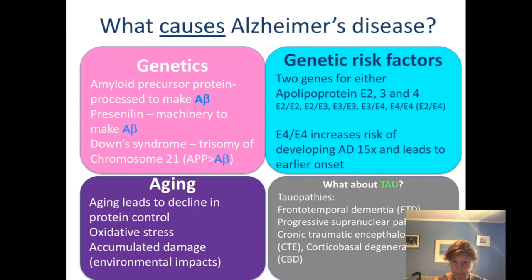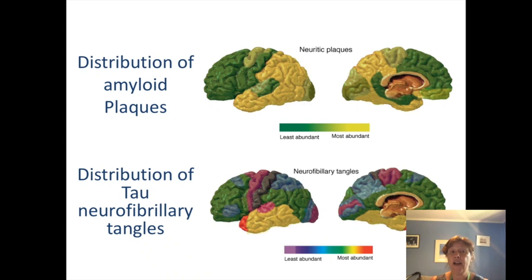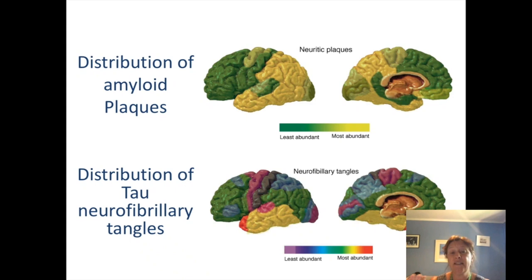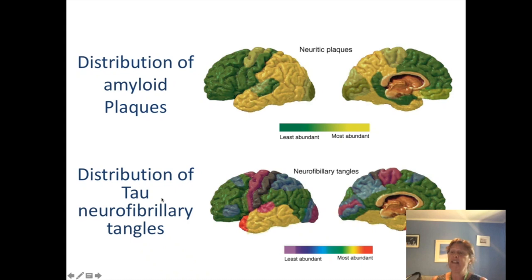We can also look at the distribution of amyloid plaques and tau neurofibrillary tangles in the brain to think about which of these is causing the deficits seen in patients. The distribution of amyloid plaques is quite even, whereas the distribution of tau is all over the place. It's been shown that generally the distribution of neurofibrillary tangles correlates better with cognitive decline — how severe the disease is — whereas amyloid plaques correlate much less well.